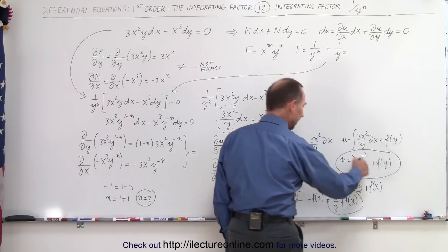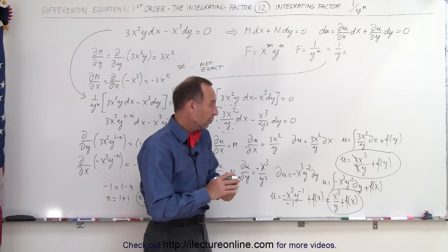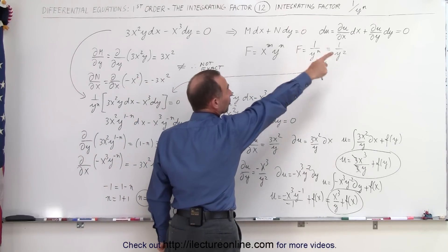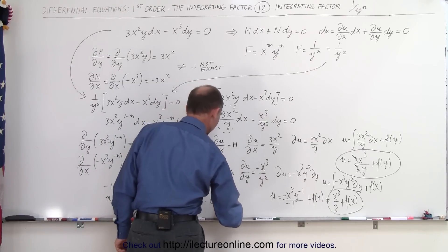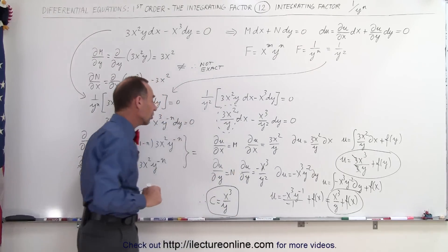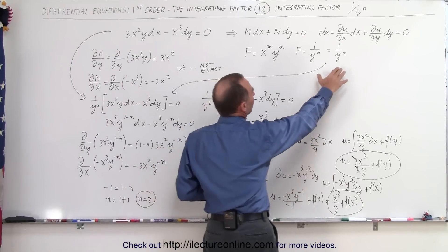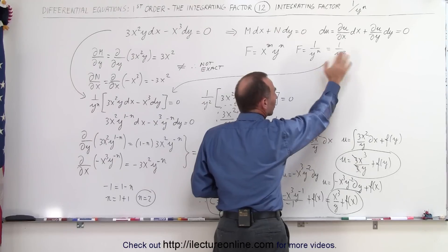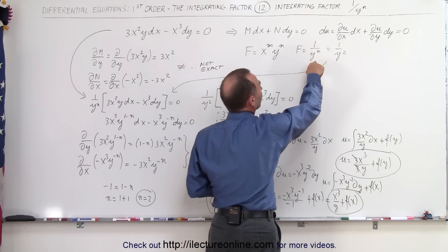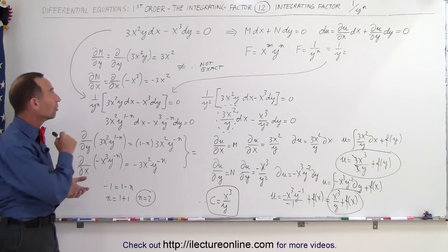Notice both expressions give x³ over y, with one having a function of y and the other a function of x. This means those functions must both be constants. Since du equals 0 means u equals a constant, the solution to our original differential equation is c equals x³ over y. This shows that integrating factors can come in all sizes and shapes — as a function of y only, x only, or both.